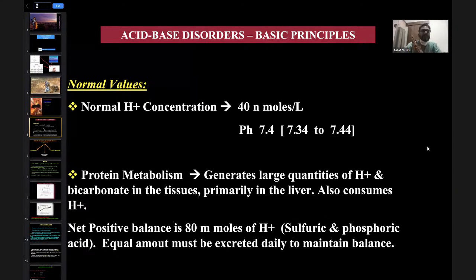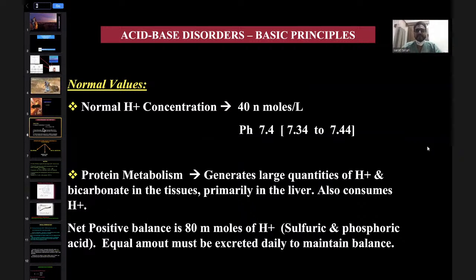In acid-base diseases, the normal value of hydrogen ion concentration is around 40 nanomoles per liter. This creates a pH of around 7.4. The range is usually between 7.34 to 7.44. This is strictly maintained in the body because any alteration in the pH causes the body to not function properly. The body has to tightly control this pH range of 7.34 to 7.44.